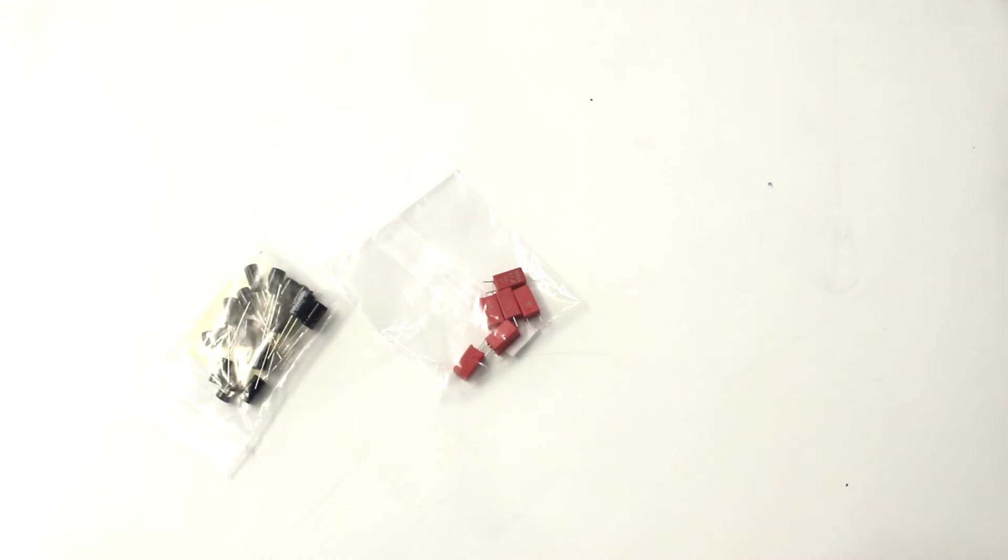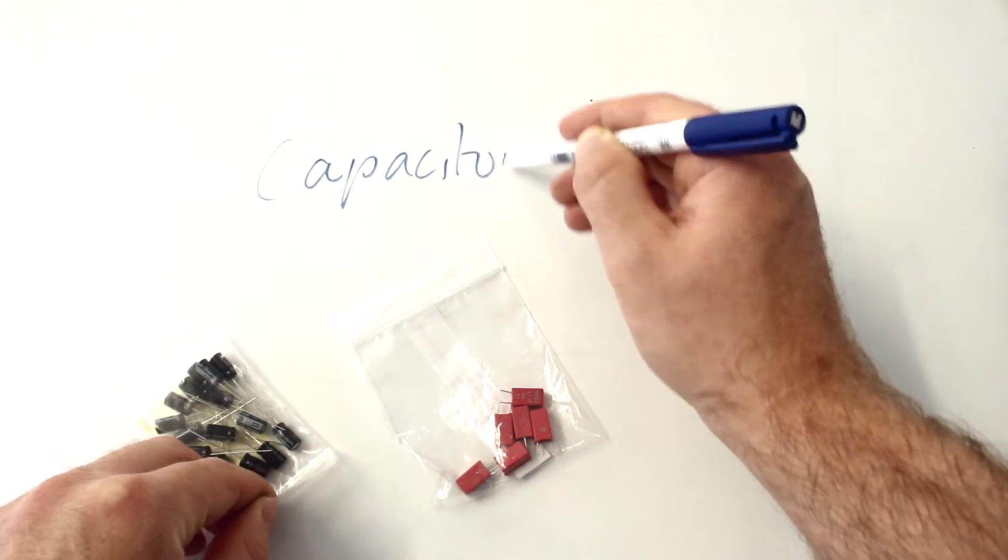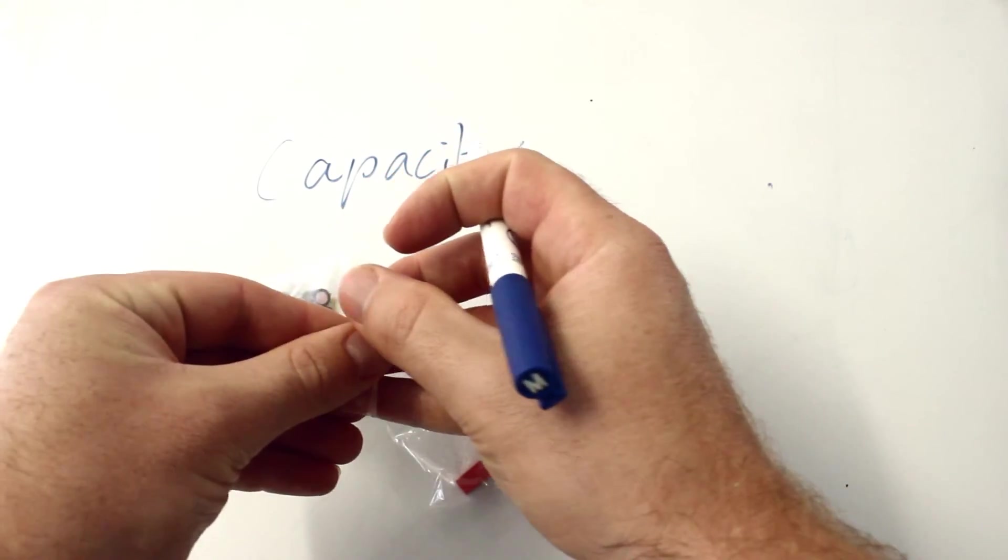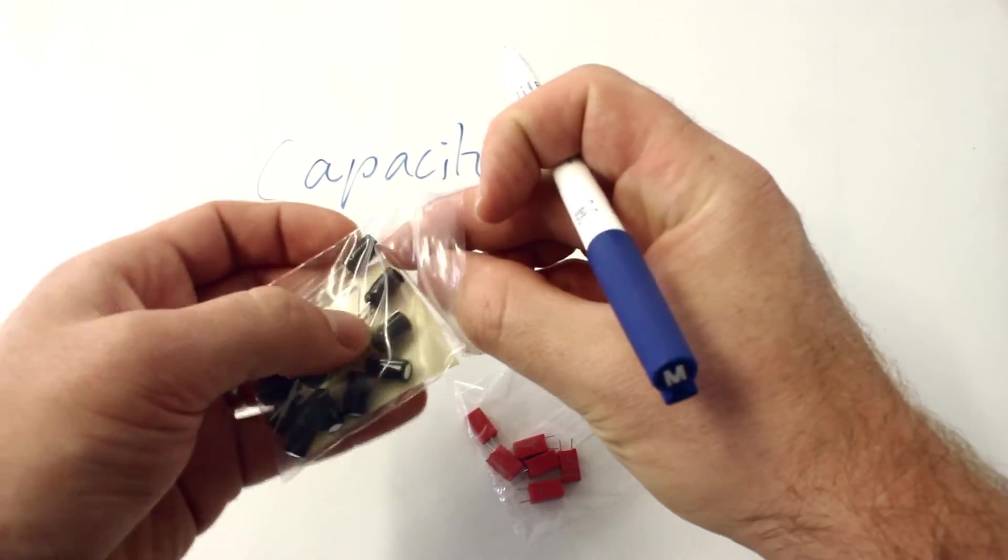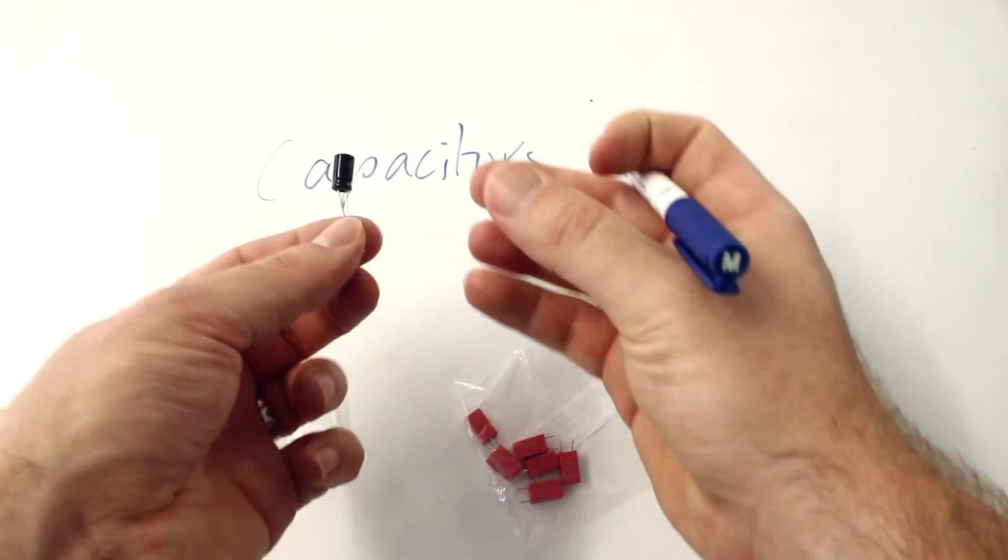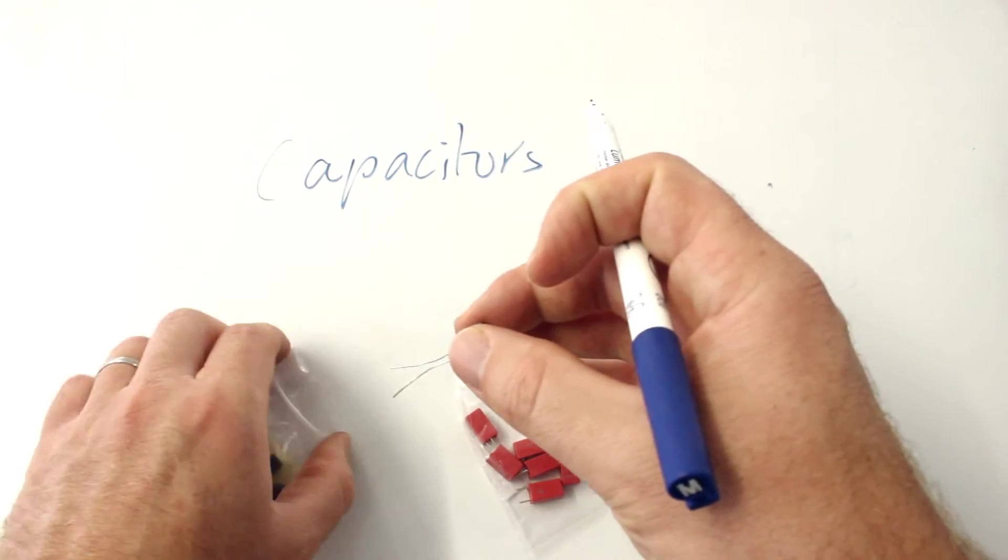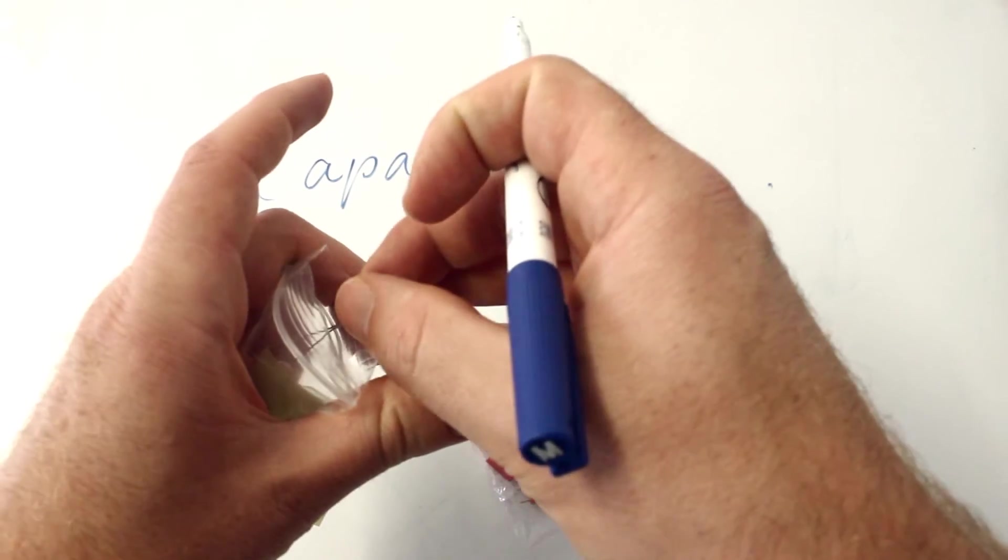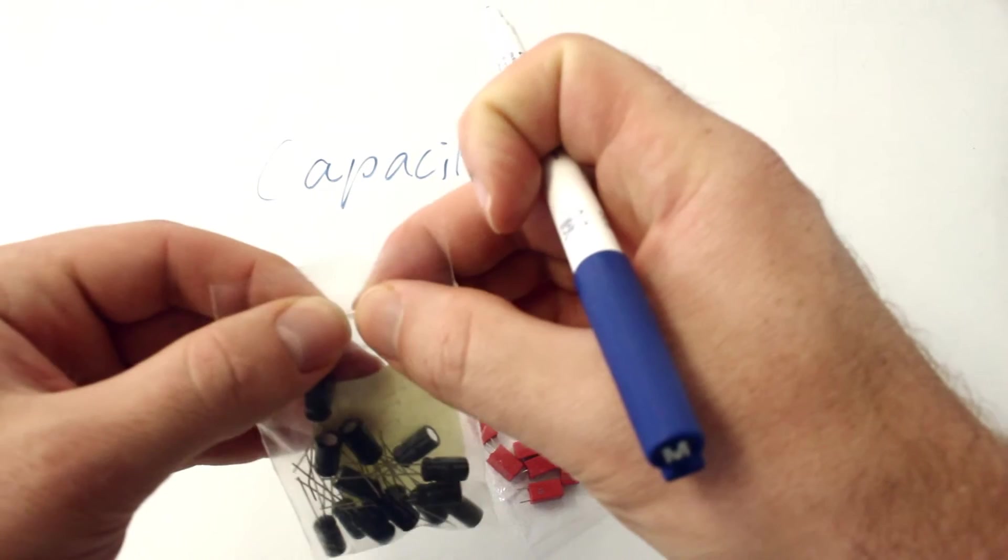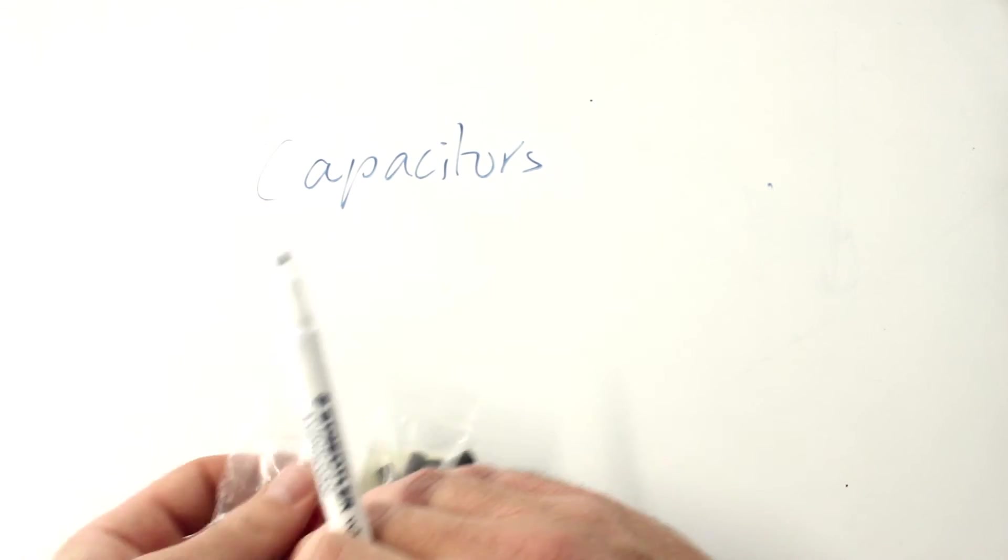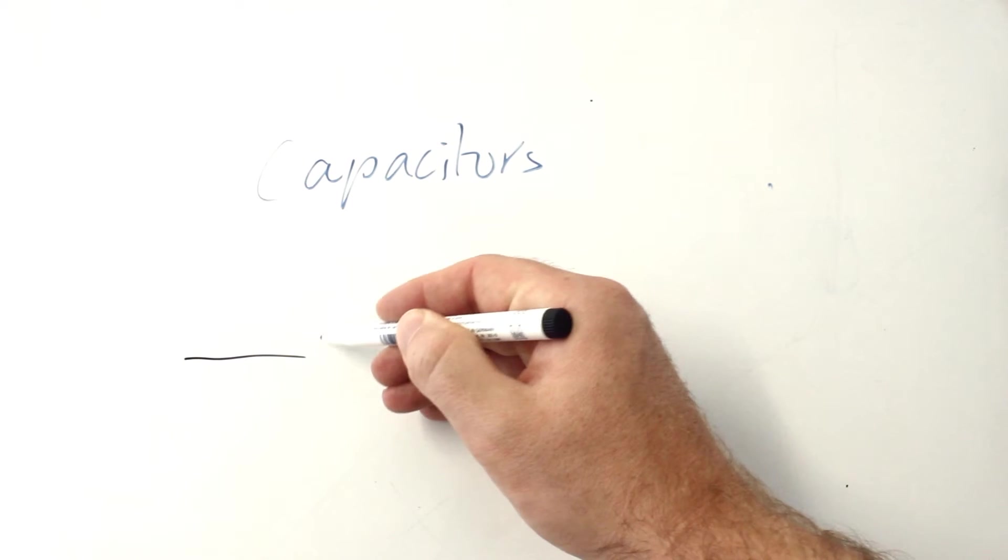These are capacitors. Capacitors have the capacity to store charge. So in here is basically two plates. And those two plates get charged up, positive and negative. And that, if you like, is how the charge is stored. There's not a conductor between them. There's an insulator between them. And that means one plate can become positive and the other one negative without the charge just going between them.